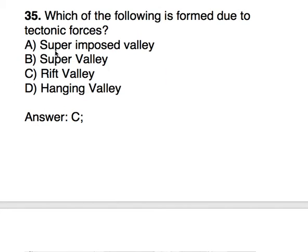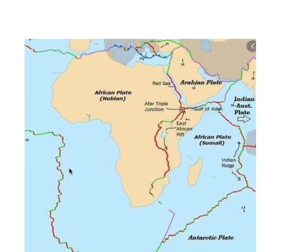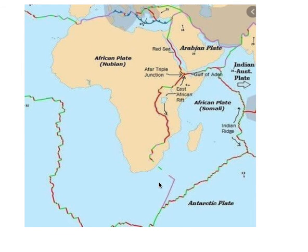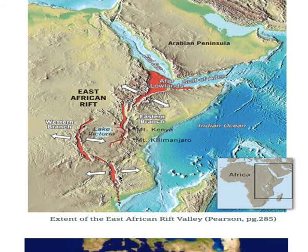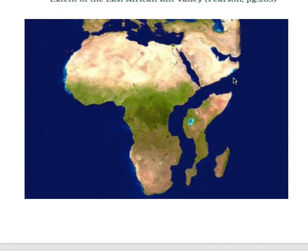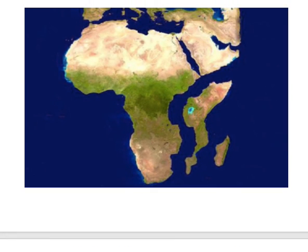The last question for the revision module: which of the following is formed due to tectonic forces? Tectonic forces lead to rift valley formation. We can understand easily from this diagram — a tectonic plate under pressure diverges, creating a rift in between. In the future it will look like this: the African continent will be split into two parts. That's all, thank you so much.